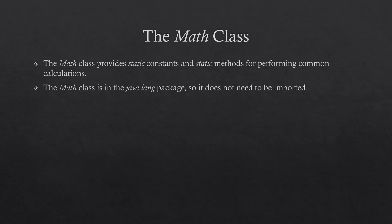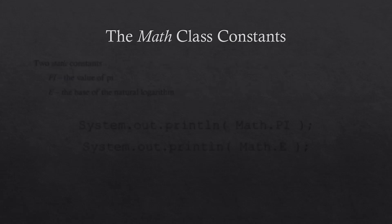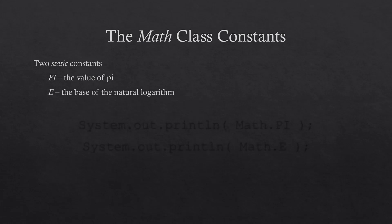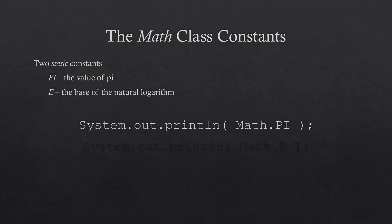Any class that is part of the java.lang package is available without the need to import it — for example, the String class we used before. The Math class provides us with two static constants: PI, which holds the value of pi, and E, which is the base of the natural logarithm. To print the value of PI, we use System.out.println with Math.PI — remember, constants are all uppercase, so both P and I are uppercase.